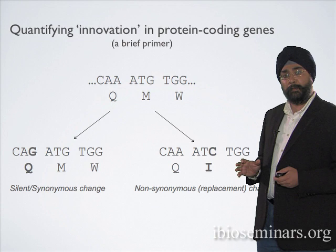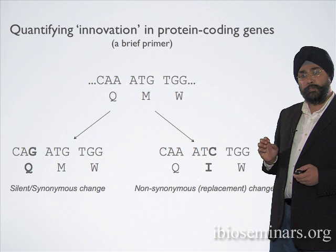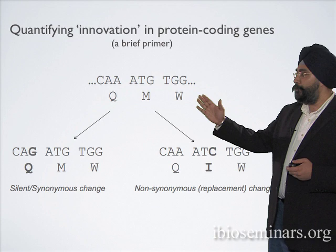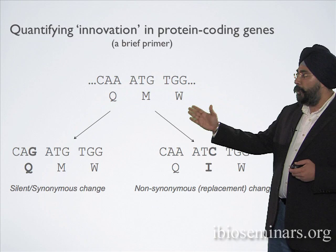We're going to talk about two types of innovation today. In the first part of my talk, focused on how hosts evolve in the face of viral challenges, we're going to specify innovation in protein-coding genes. If you consider what a protein-coding gene looks like, it's a sequence of triplets — three codons — that specify three amino acids to be incorporated into the protein produced from that gene.